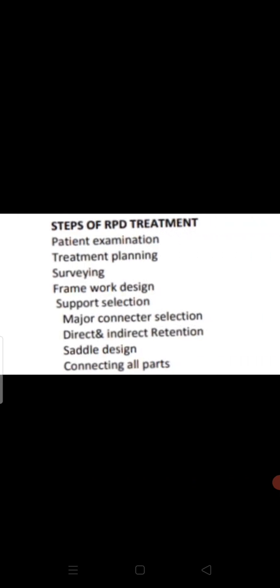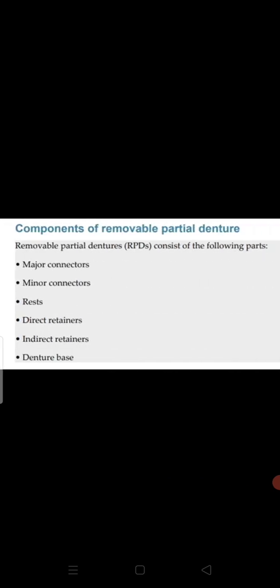Now the steps of removable partial denture treatment. Step one: patient evaluation and examination. Step two: treatment planning. Step three: surveying — using a surveyor instrument to identify undercuts to allow simple placement and removal of the denture. Step four: framework design. Step five: support selection — tooth or tooth-and-tissue. Step six: major connector selection. Step seven: direct and indirect retention selection. Step eight: saddle design. Step nine: connecting all parts of the removable partial denture.